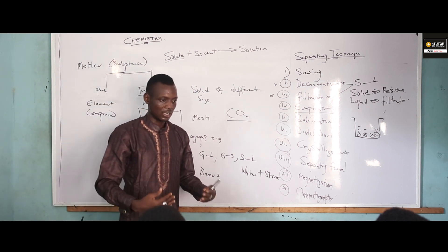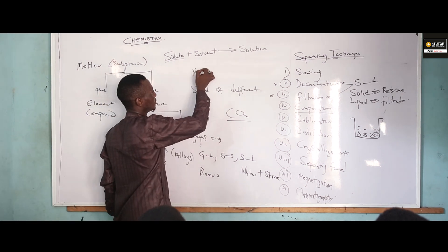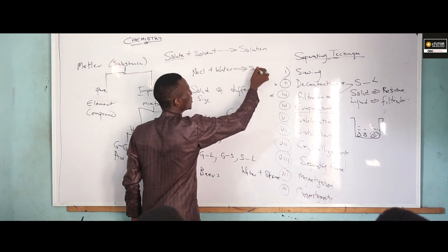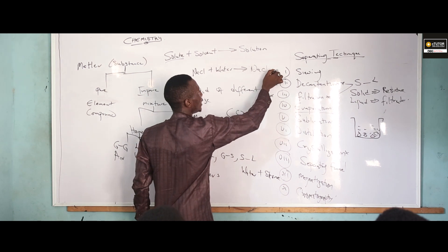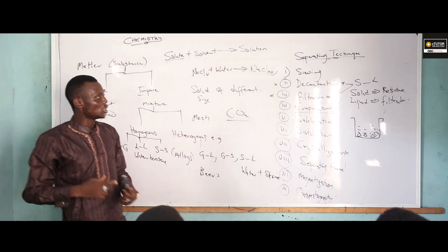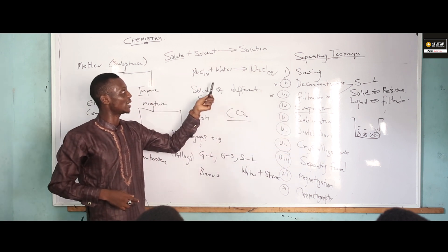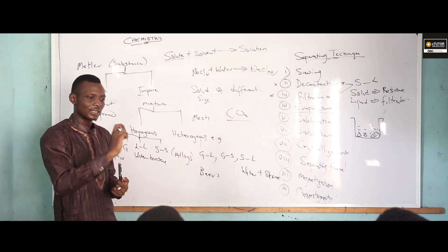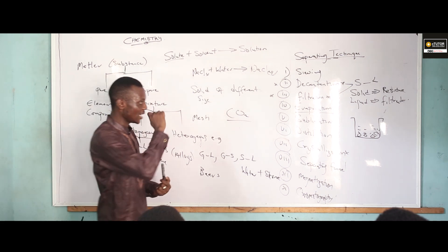For example, sodium chloride plus water forms a sodium chloride solution. NaCl is a solid. We can use evaporation to dryness to recover our sodium chloride from water, since sodium chloride is a type of solid that can withstand heat.